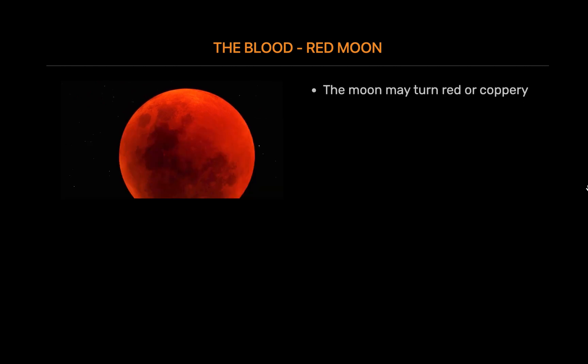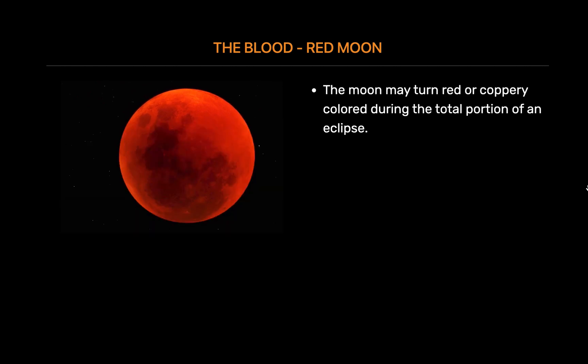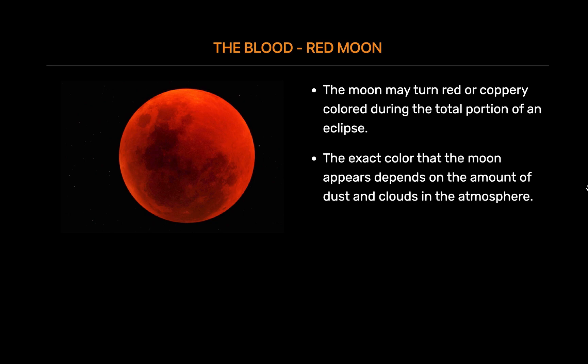The Blood Red Moon. The Moon may turn red or coppery-colored during the total portion of an eclipse. This is possible because while the Moon is in total shadow, some light from the Sun passes through Earth's atmosphere and is bent toward the Moon. While other colors in the spectrum are blocked and scattered by Earth's atmosphere, red light tends to make it through easier, casting all the planets' sunrises and sunsets on the Moon. The exact color depends on the amount of dust and clouds in the atmosphere. If there are extra particles from a recent volcanic eruption, the Moon will appear a darker shade of red.